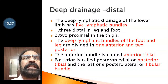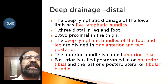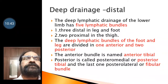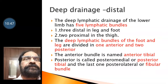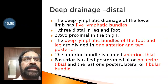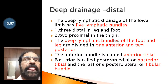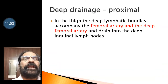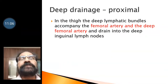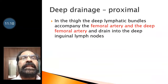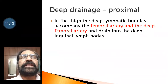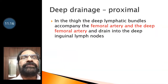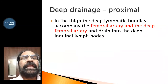The deep lymphatic bundles of the foot and leg are divided into one anterior and two posterior. The anterior bundle is named the anterior tibial. Out of the posterior bundles, the posterior medial is also called the posterior tibial, and the posterior lateral is also called the fibular bundle. In the thigh, deep lymphatic bundles accompany the femoral artery and the deep femoral artery, that is profunda femoris, and drain into deep inguinal lymph nodes.